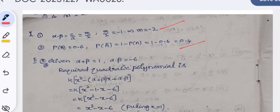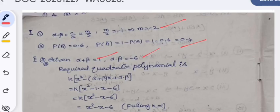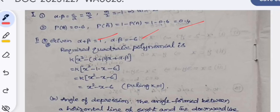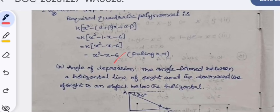Given α + β = 1 and α × β = -6, then the polynomial with sum of the roots 1 and product of the roots -6 is x² - x - 6. The angle of depression is defined here and a rough diagram of angle of depression is also shown.